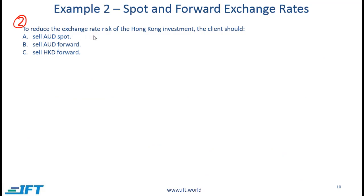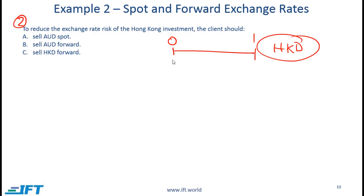For Question 2: to reduce the exchange rate risk of the Hong Kong investment, what should the client do? His investment is in Hong Kong dollars. To mitigate the risk, he can sell Hong Kong dollars in the forward market — at time zero he locks in a rate at which he will sell Hong Kong dollars. No matter what the spot rate is at time one, he will receive the rate specified in the forward contract. The correct answer is C.